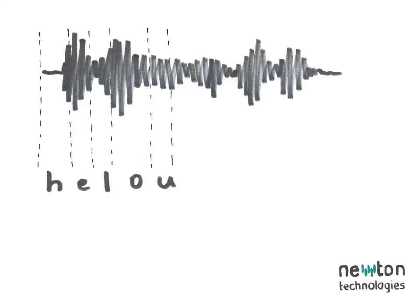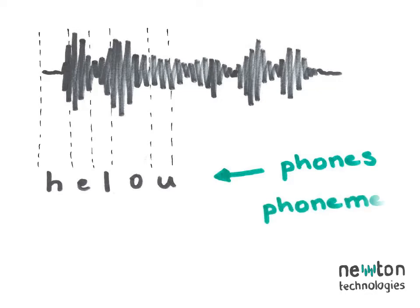The first step the ASR system needs to do is process the sound. More magic happens here that I won't be delving into, but the goal of this step is to have chunks of speech that can be worked with and that can be mapped to letters. Let's call these chunks phones. The fancy term you can also hear is phoneme.